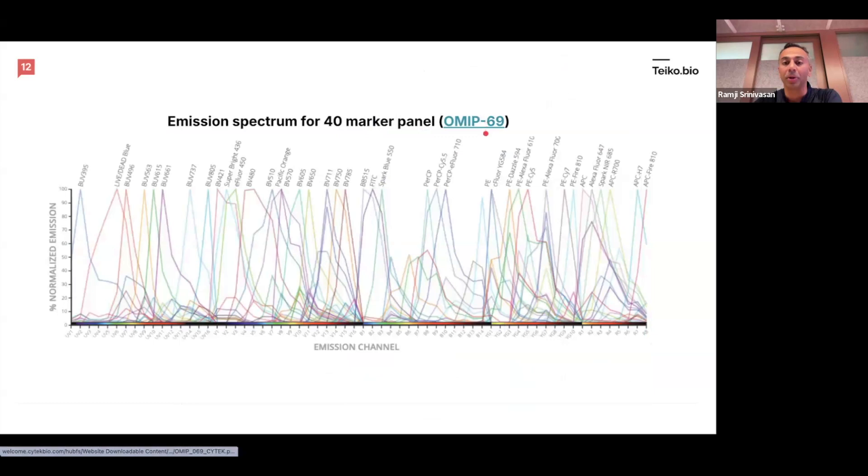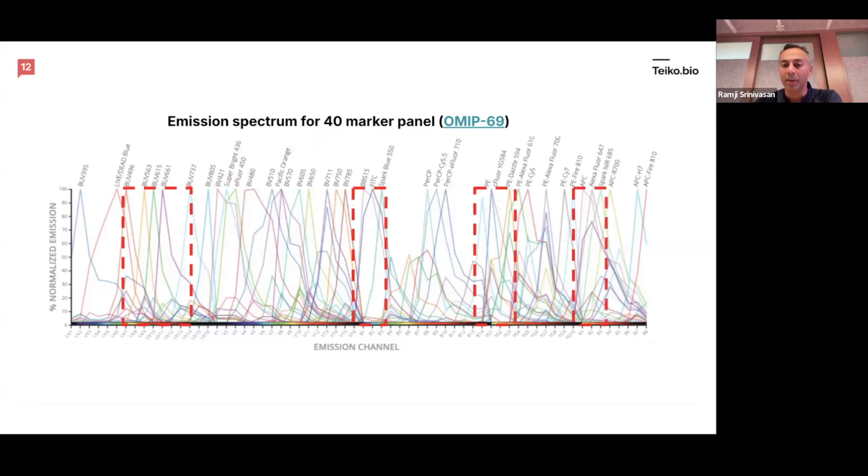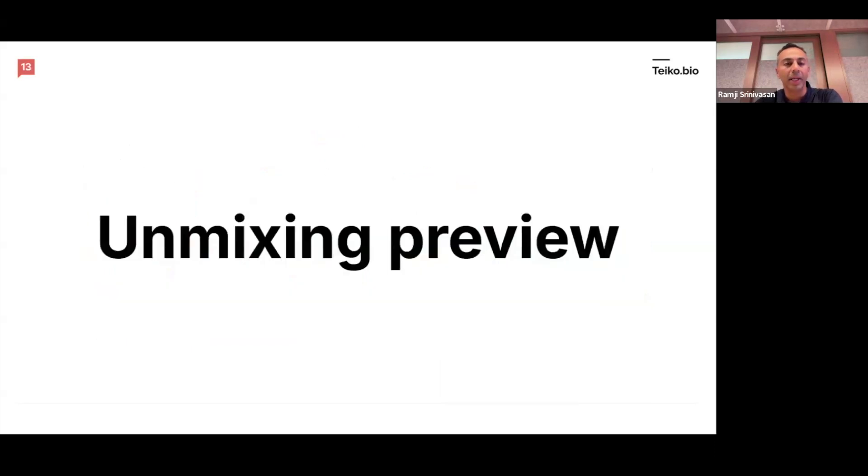And this is the emission spectrum for a 40 marker panel. You can see on the x-axis, again, remember those emission channels we had, we excerpted them before, but now you're seeing the full spectrum, everything from UV1 all the way to RA, and the percent of normalized emission. This is something that would be very challenging to resolve on conventional flow. You'd have to untangle all of these. In fact, if you use conventional flow, you might have a bandpass filter that looked over here, another one that looked over here, another one that looked over here, and another one that looked over here. And the issue with that is things in this range would be indistinguishable through a bandpass filter. So for example, PE, C floor YG584, et cetera, one wouldn't be able to distinguish these signals through a classic bandpass filter.